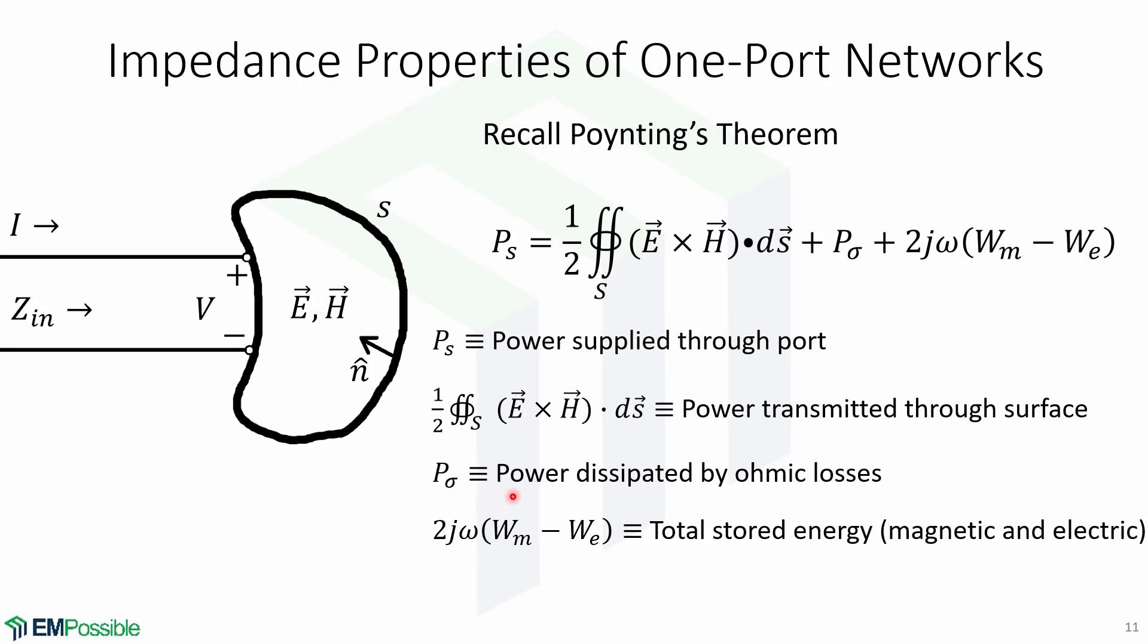P_sigma is the power dissipated by ohmic losses. And the expression 2j omega times W_m minus W_e is the total stored energy, which can be magnetic, which is defined by W_m, and electric, defined by W_e.